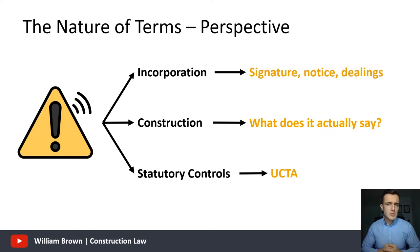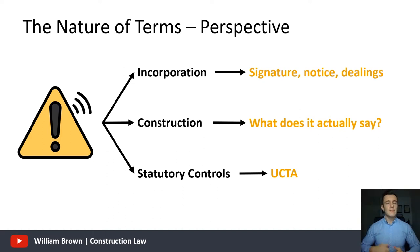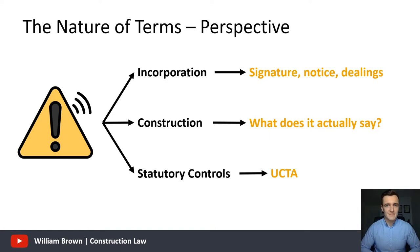We will also look at certain things you simply cannot do under the Unfair Contract Terms Act, such as limiting liability for death or personal injury caused by your own negligence.